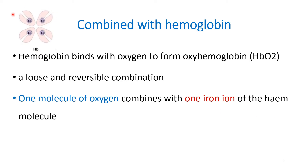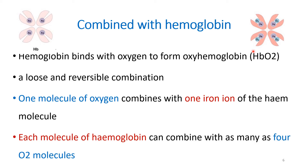One molecule of hemoglobin contains four iron atoms, and one iron atom can combine with one oxygen molecule. This means one hemoglobin molecule can actually combine with four molecules of oxygen. Each molecule of hemoglobin can combine with as many as four molecules of oxygen.